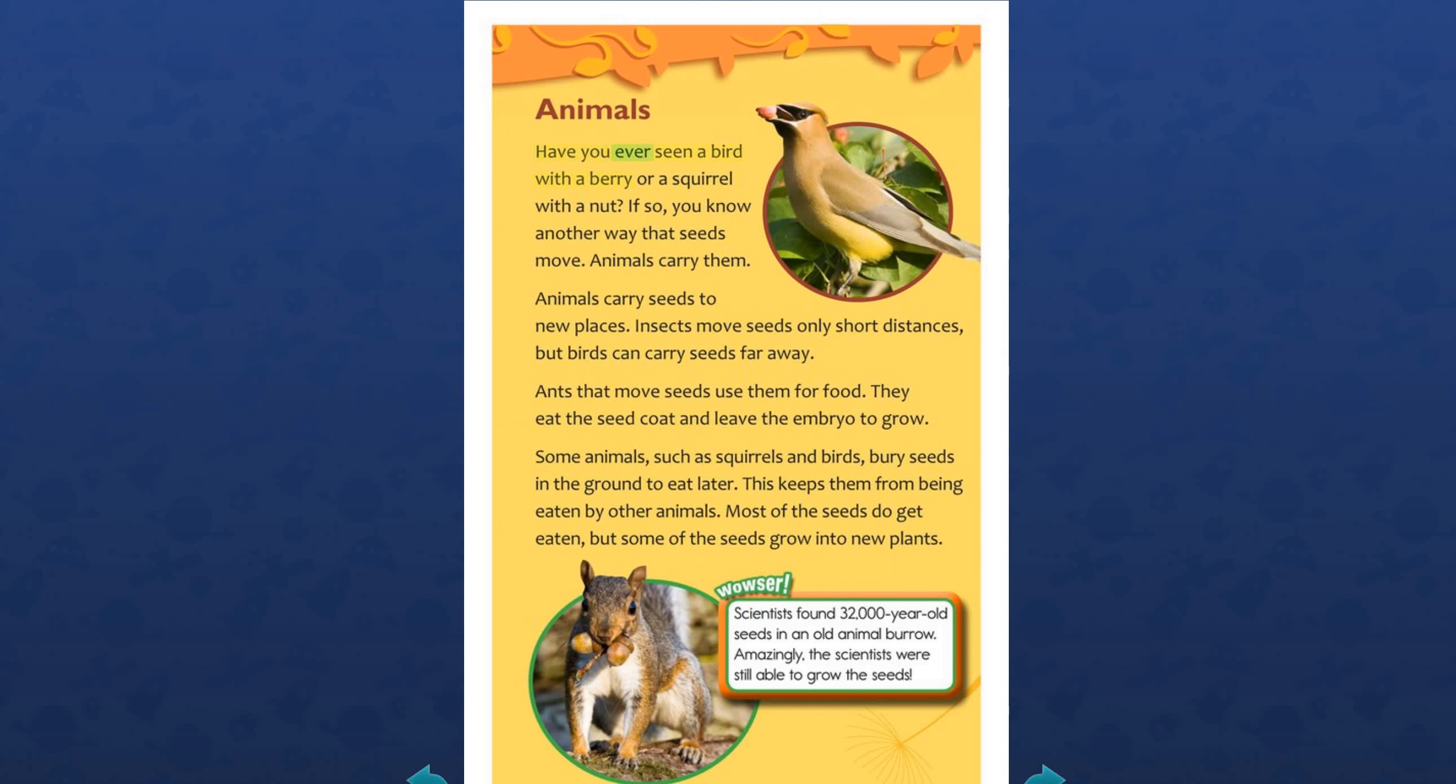Animals: Have you ever seen a bird with a berry or a squirrel with a nut? If so, you know another way that seeds move. Animals carry them. Animals carry seeds to new places. Insects move seeds only short distances, but birds can carry seeds far away. Ants that move seeds use them for food. They eat the seed coat and leave the embryo to grow. Some animals, such as squirrels and birds, bury seeds in the ground to eat later. However, this keeps them from being eaten by other animals. Most of the seeds do get eaten, but some of the seeds grow into new plants. Wowzer! Scientists found 32,000-year-old seeds in an old animal burrow. Amazingly, the scientists were still able to grow the seeds.